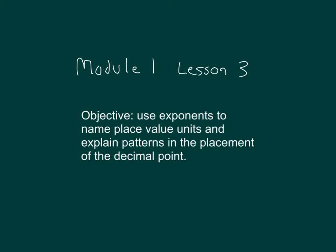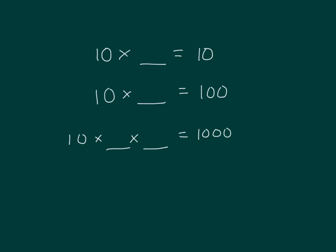The objective is to use exponents to name place value units and explain patterns in the placement of the decimal point. Let's go ahead and complete these number sentences. 10 times what equals 10? Right, 1.